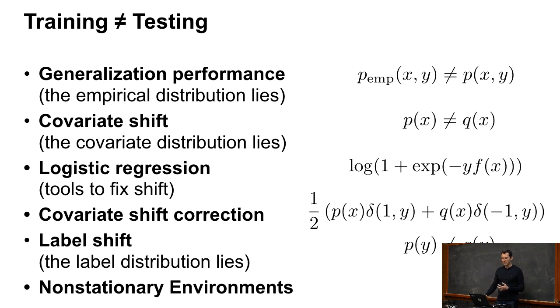Then you might have covariate shift, which means that the covariate distribution lies. In other words, what I'm seeing at training time looks different from what I'm seeing at test time. That would be the equivalent of Mu and Alex writing the homeworks for the regular time and then the TAs writing the exam. Then I'll give you some ideas of how to fix this through logistic regression. I'll talk about covariate shift correction and label shift, which is actually a special case of covariate shift. And then in the end, we'll talk about non-stationary environments. This is sort of the things that we're going through today.